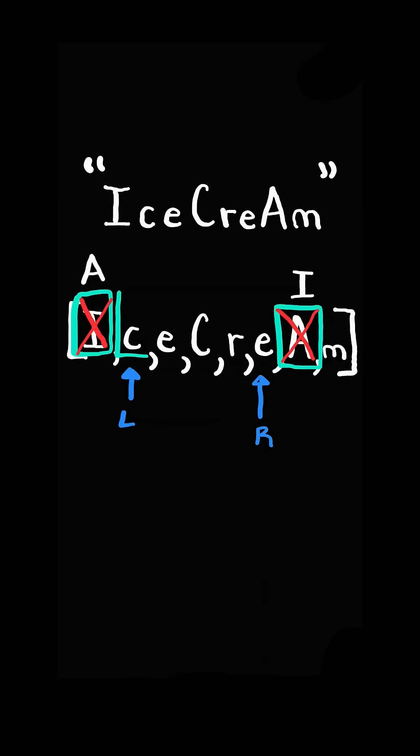The left pointer does not point to a vowel. We advance it. Now both pointers point to a vowel. So we swap and advance both pointers.